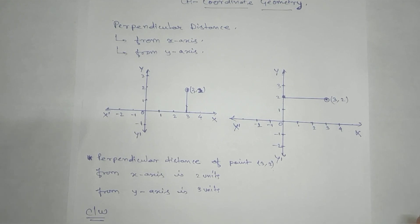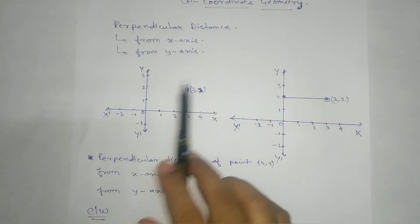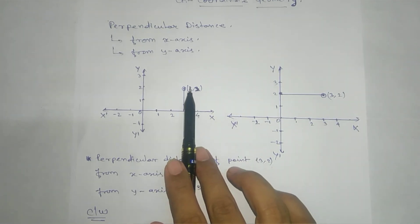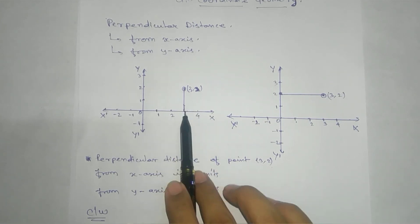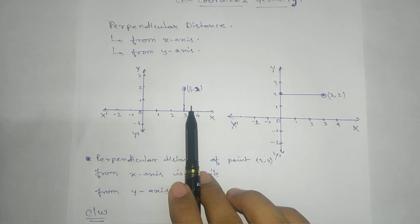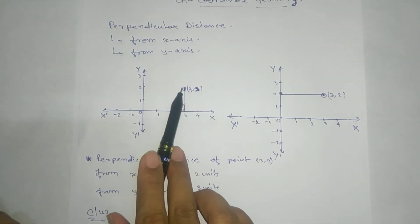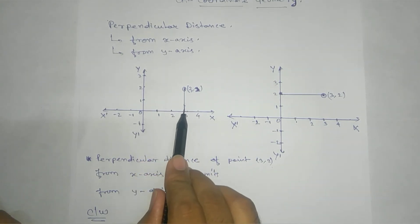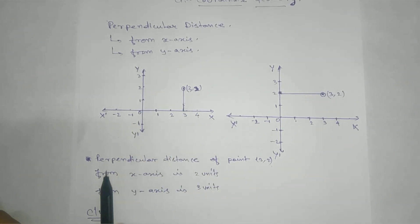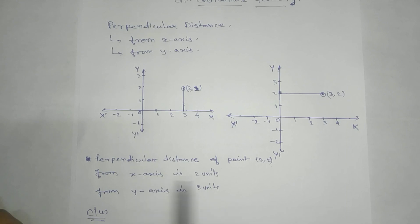Today we are going to see two concepts: perpendicular distance and mirror image of a given point. First, perpendicular distance from x-axis and y-axis. We have taken the point (3, 2) on the coordinate plane. To find the perpendicular distance from the x-axis, we take a perpendicular from this point to the x-axis, and you can see that this length is two units.